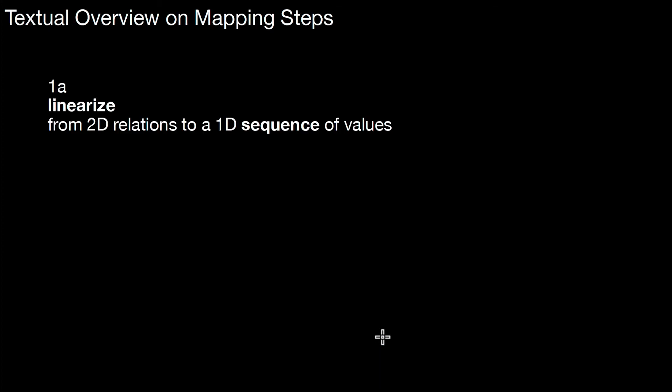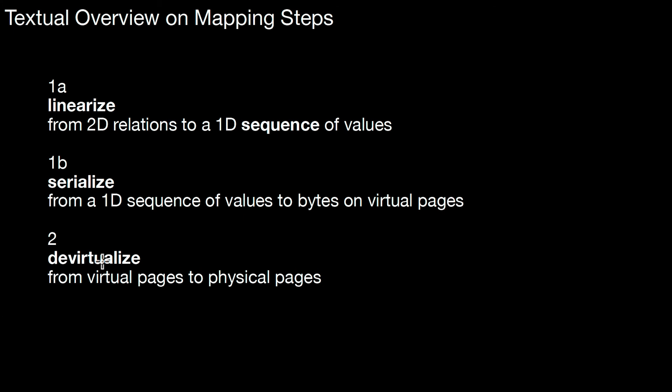A textual overview on those mapping steps. 1A is to linearize from 2D relations to a 1D sequence of values. Those values don't have to be mapped yet to byte arrays. That is what happens in step 1B. So in 1B, we serialize the values. We get from a 1D sequence of values to bytes on virtual pages. In step two, we de-virtualize. We have to map virtual pages to physical pages. And in step three, we materialize, which means physical pages are mapped to storage devices. Those are the four mapping steps. And in the following, we will look at that.